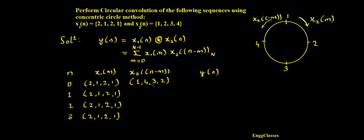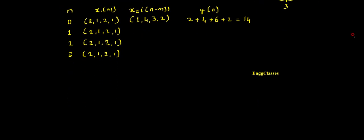Now I multiply the individual samples and add them up. So: 2×1 = 2, plus 1×4 = 4, plus 2×3 = 6, plus 1×2 = 2. Summing these gives y(0) = 14.